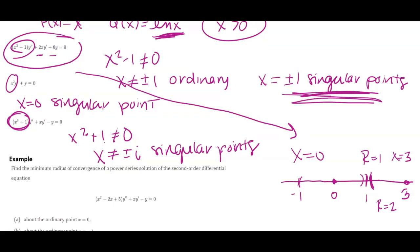And so these singular points are really important because you need to understand the distance between the point that you are trying to find your power series at, like what the center of your power series would be, and then how far it is to any singular points that you might have. That's what's going to define your minimum radius of convergence.